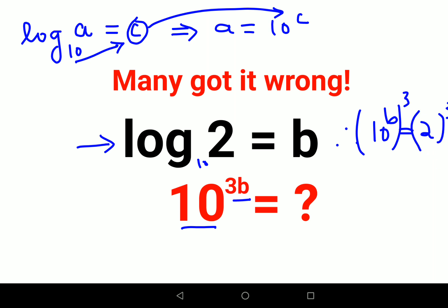Now please understand there is another rule of indices which says a raised to m the whole raised to n is nothing but a raised to m into n. So meaning that this becomes 10 raised to b into 3 that gets you 10 raised to 3b and this is 2 cube which is 8.